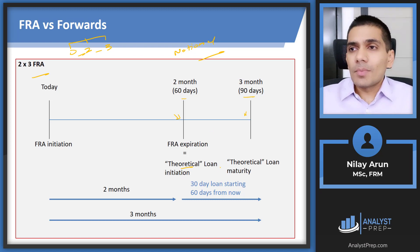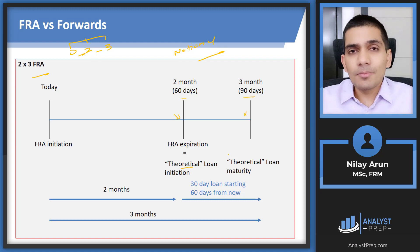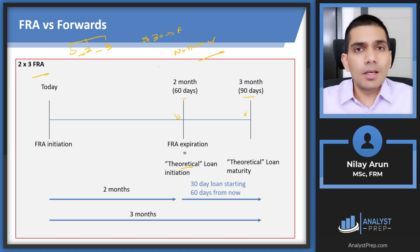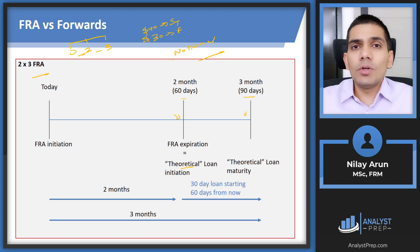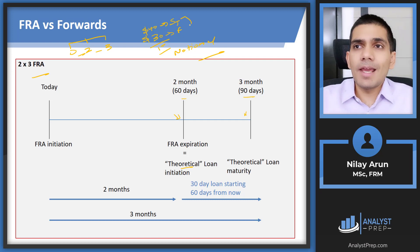In a regular forward contract, the long makes money when the price of the underlying goes up. For example, if you agreed to buy at $30 (the forward rate) and the spot rate in the market rose to $40, you save $10. The payoff is simply ST minus F. For an FRA it works similarly, but with an important difference: interest on a loan is paid at the end, not upfront.